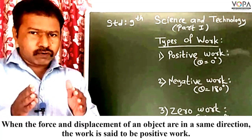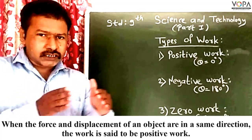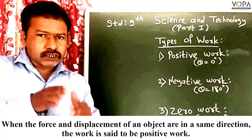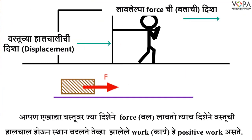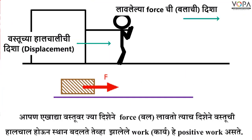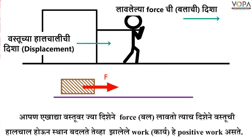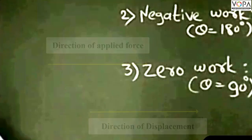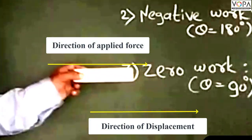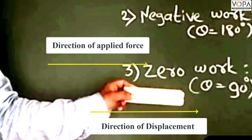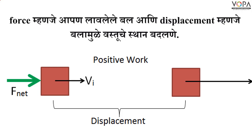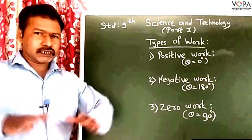When the force and displacement are in the same direction, the work done by the force is said to be positive work. For example, suppose this is an object and if I push this object, the force direction and displacement direction are the same. The displacement of the object is in the direction of the force, so this is positive work.